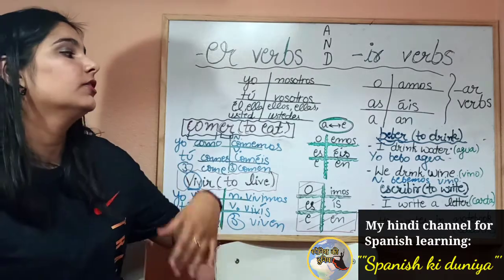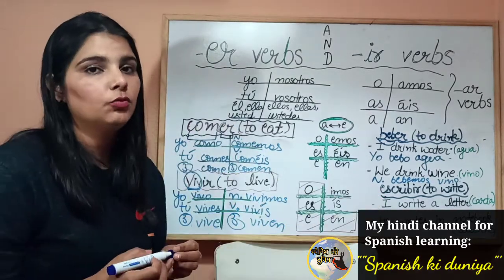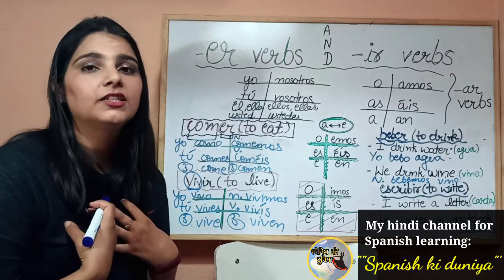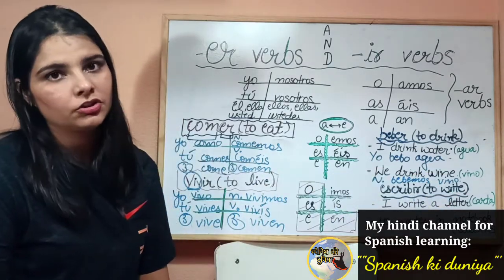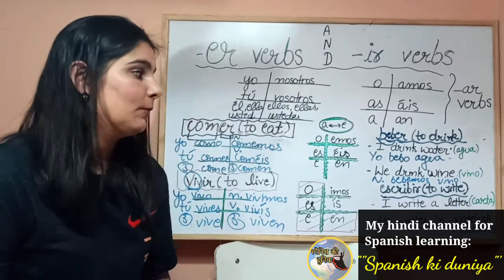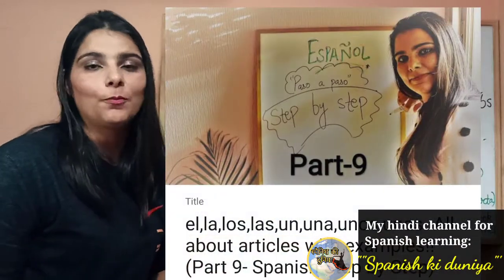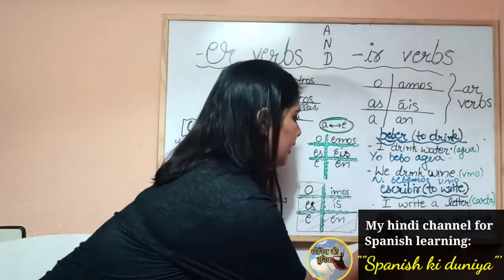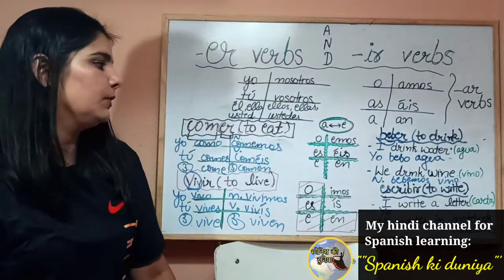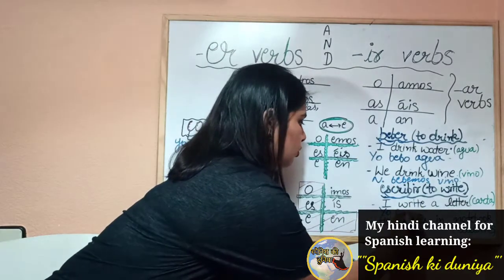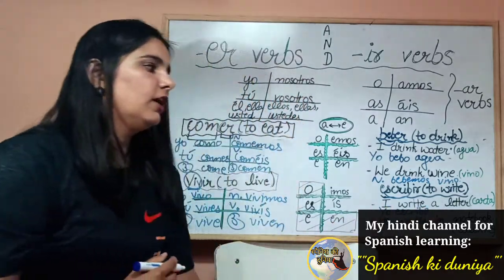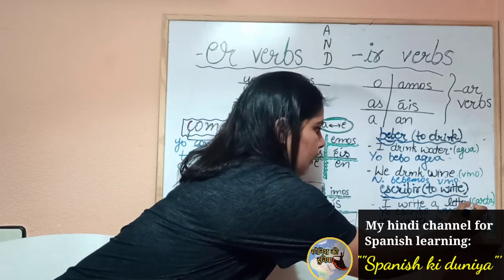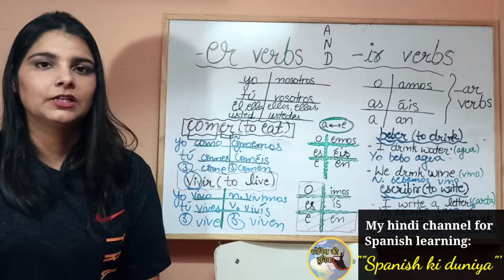Now another example: ESCRIBIR. Escribir is an IR termination verb — a very important verb. It means 'to write.' If I want to say 'I write a letter' — letter is carta in Spanish, and it is feminine so we use una — it would be: yo escribo una carta. That is how simple it is.